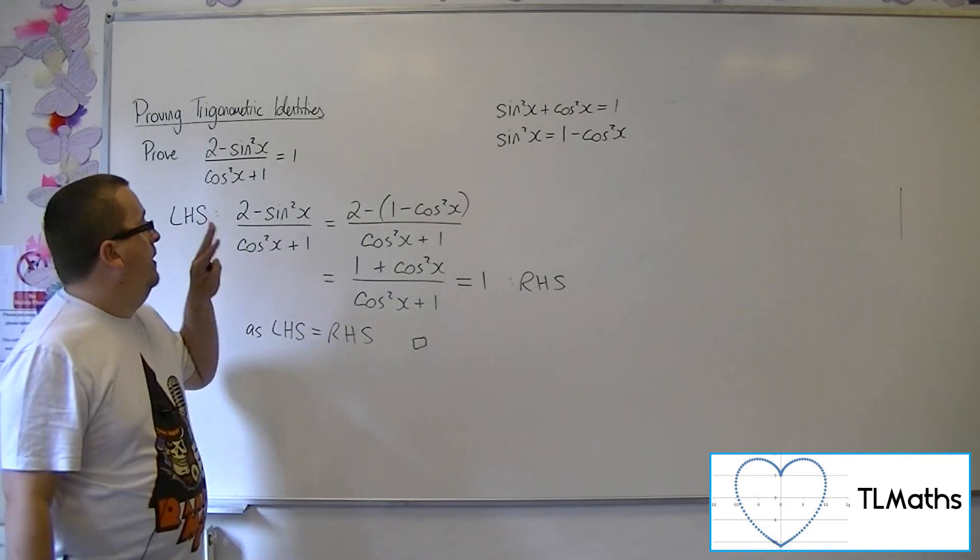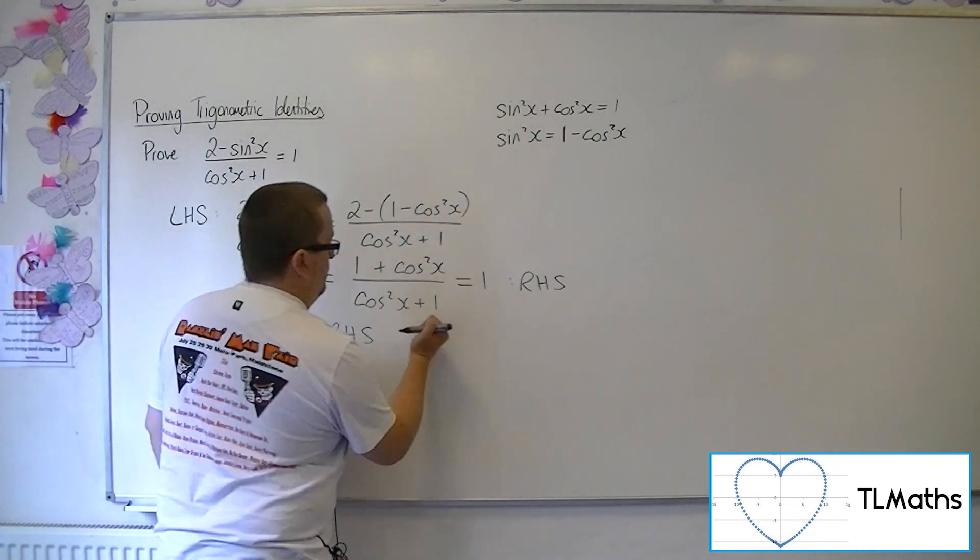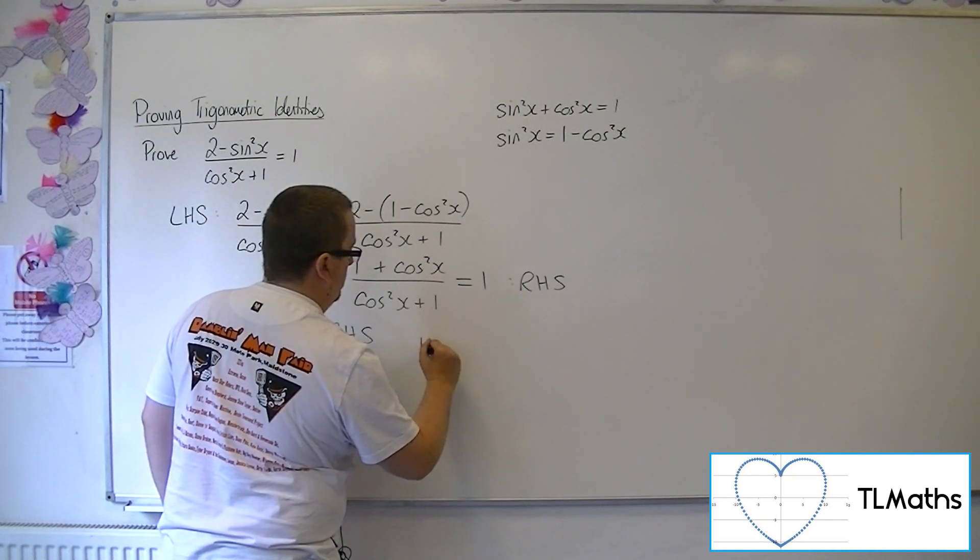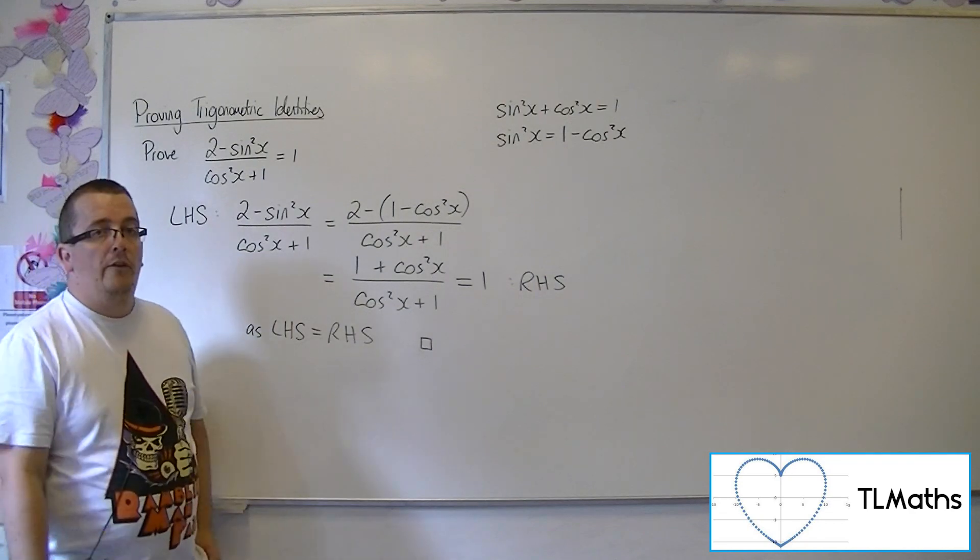The actual identity has been proved. And proofs usually end in a little square to show that you are finished.